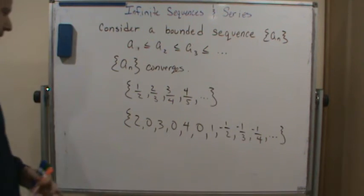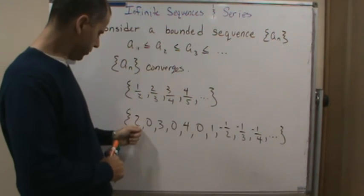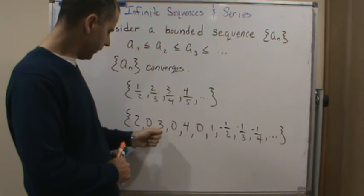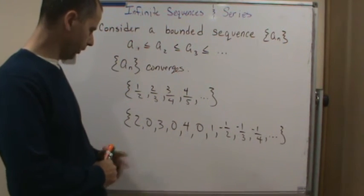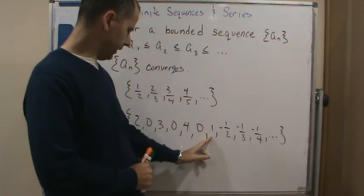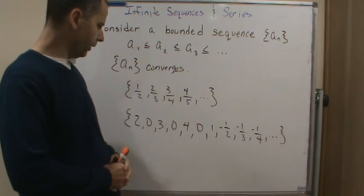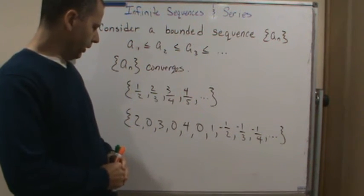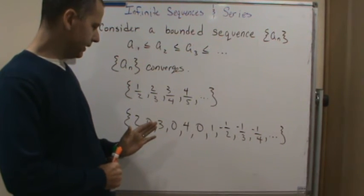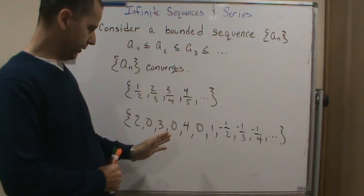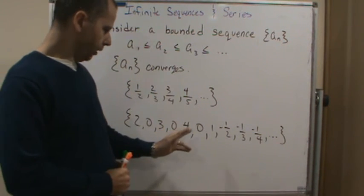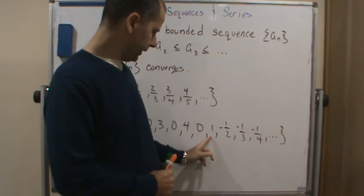Notice what happens here. It goes 2-0, then 3-0, 4-0. So it's going up and down here. So from here to here, it's going up and down. So it's not increasing for all of the values of n.